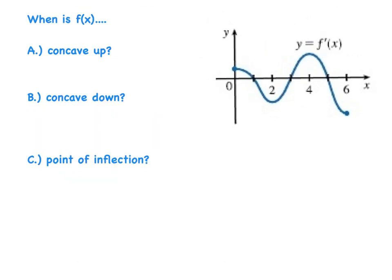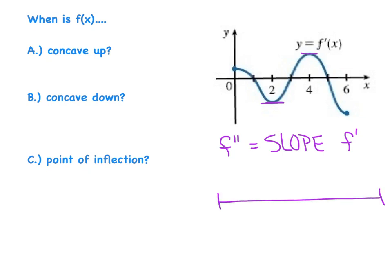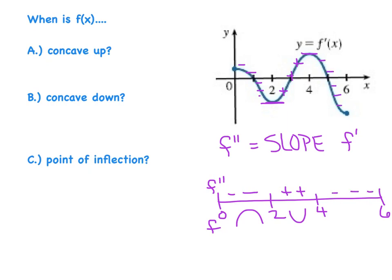Same function, but now we tackle concavity. Our focus shifts to f double prime — remember, f double prime is the slope of f prime. We've got horizontal tangents at x equals 2 and x equals 4, so those are our only critical points, with endpoints of 0 and 6. Between 0 and 2, all slopes are negative so f double prime is negative and f is concave down. From 2 to 4, slopes are positive, so f is concave up. From 4 to 6, slopes are negative again, so f is concave down.